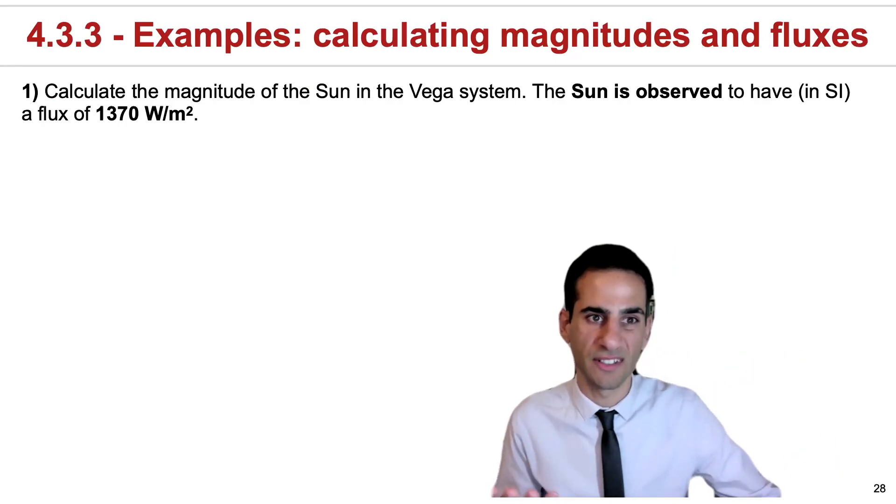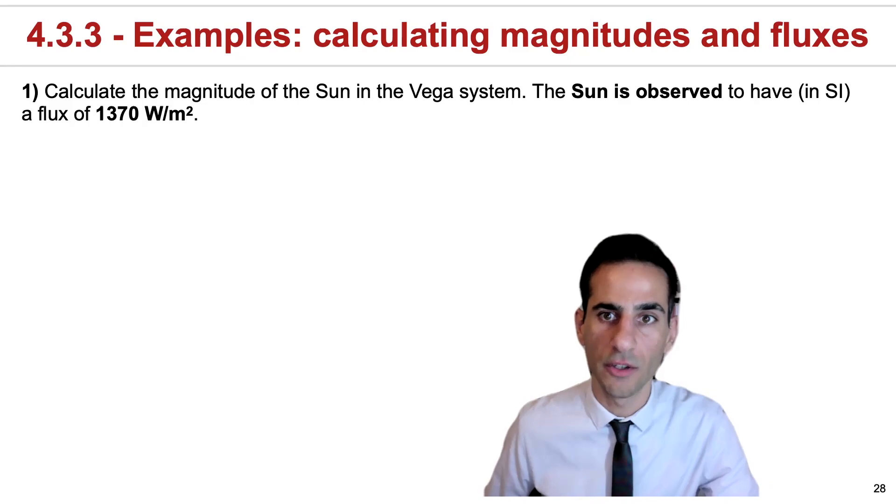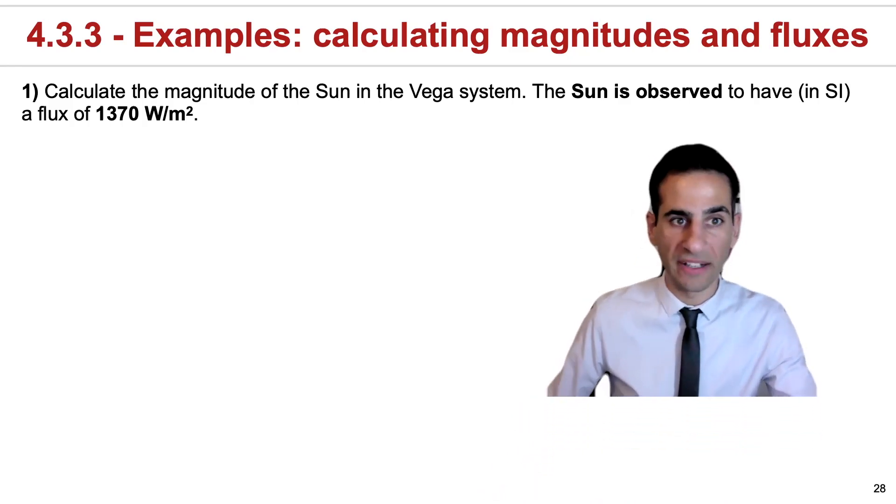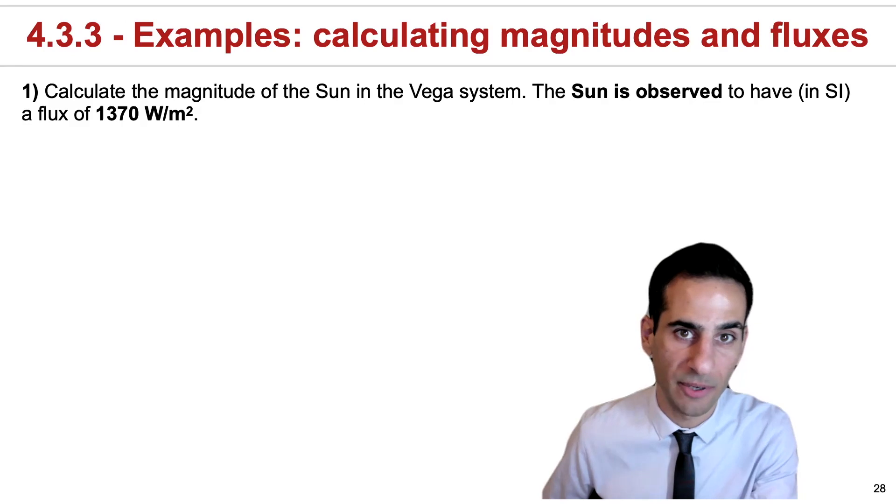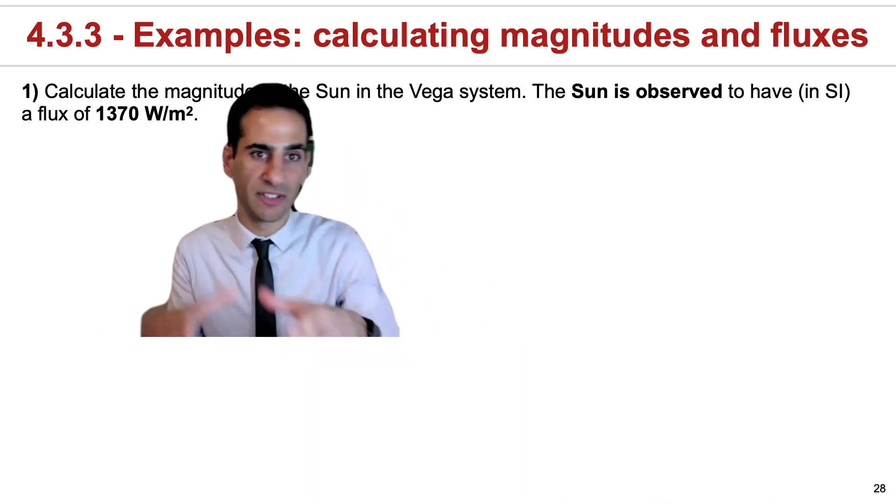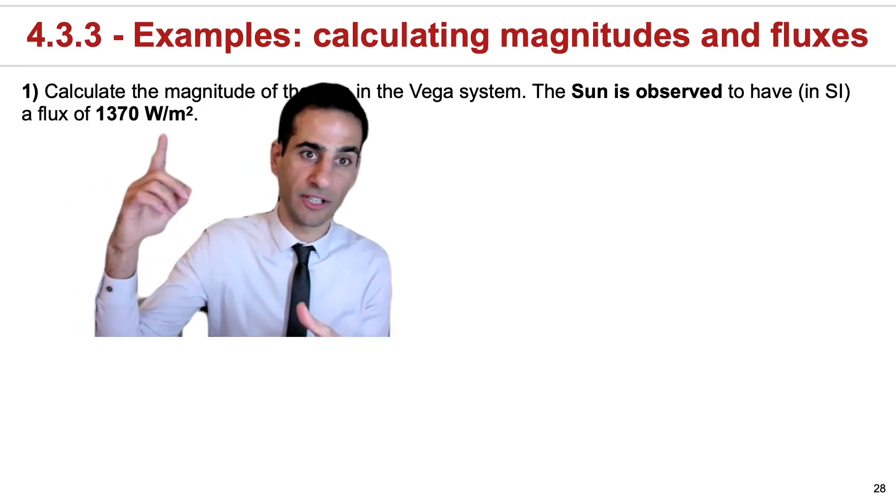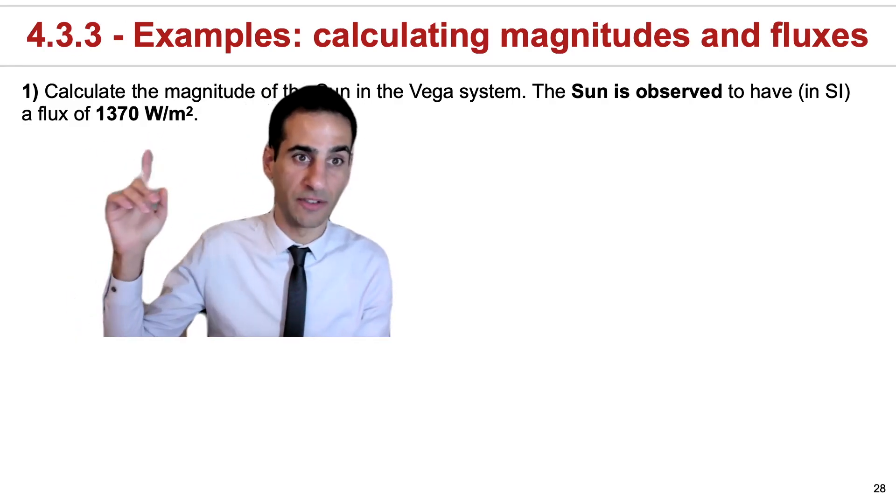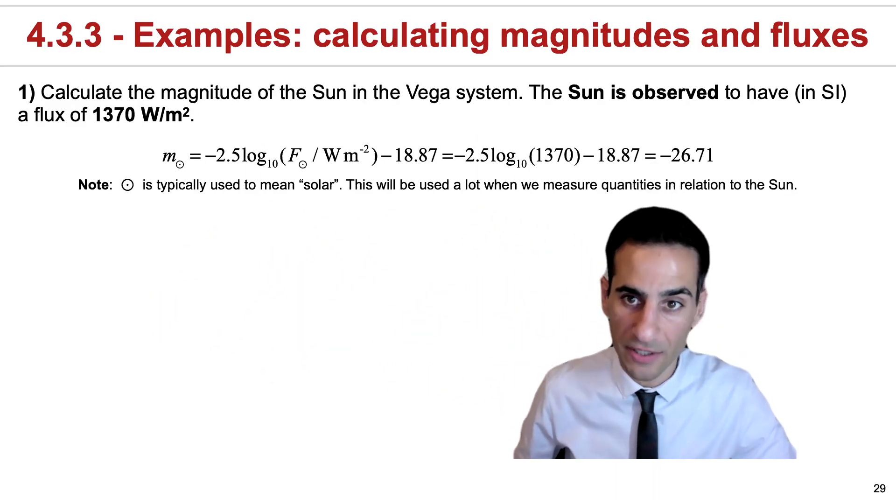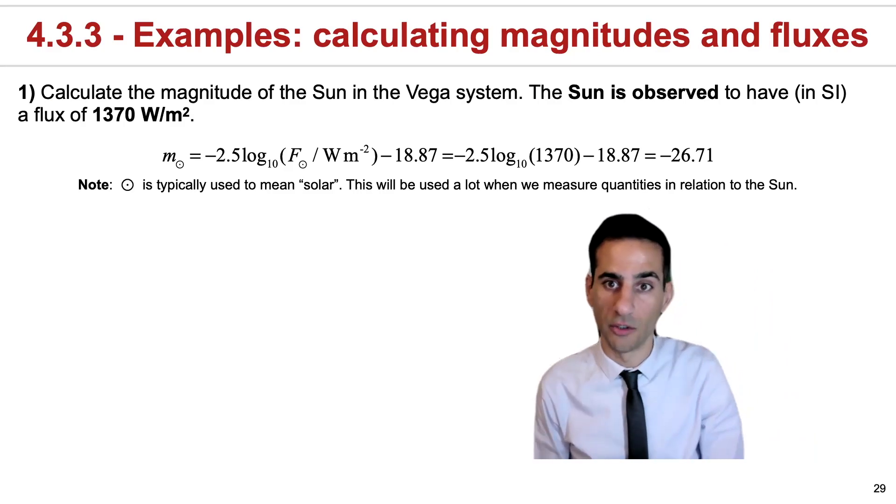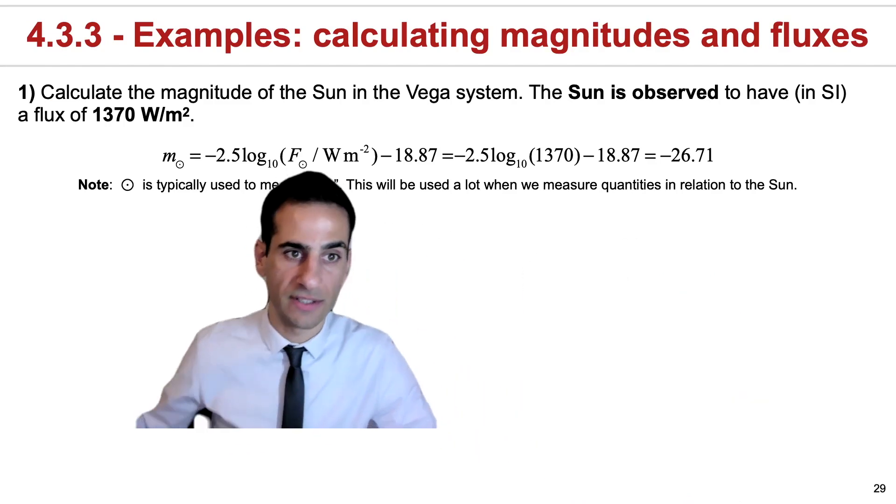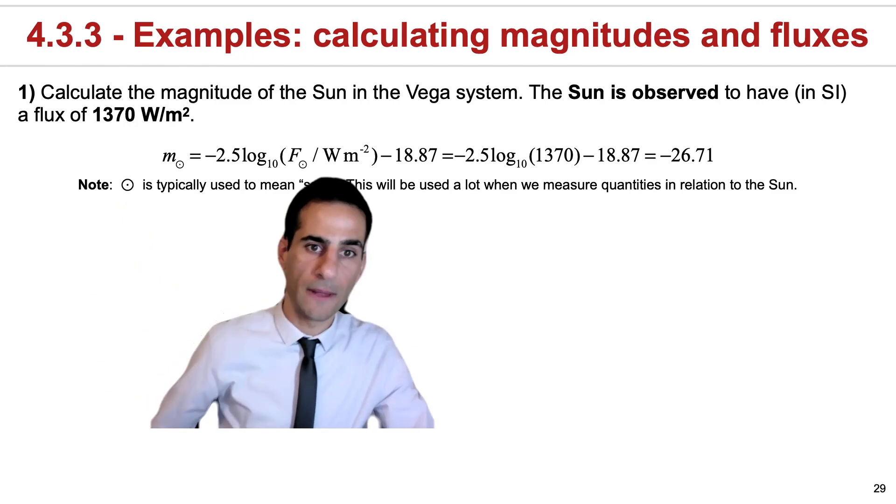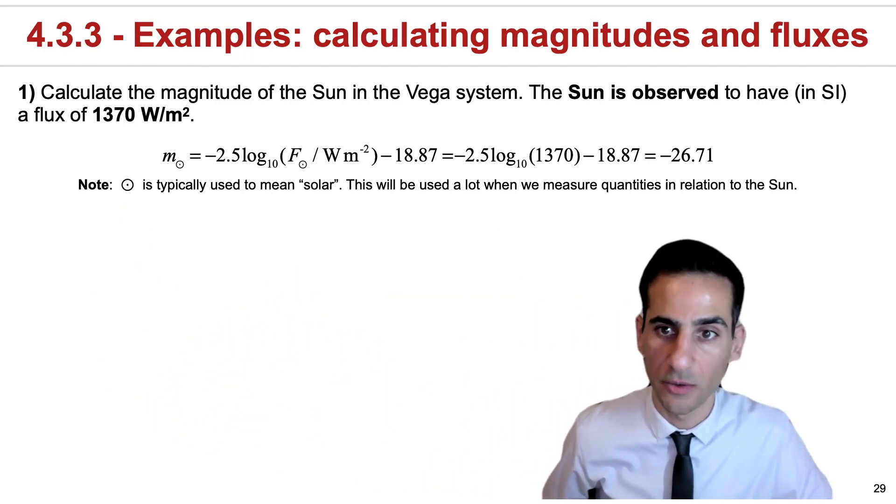Now in the lecture notes and also on the slides, you'll find examples of how you can actually apply this new knowledge of magnitudes and the Vega system. Perhaps the most obvious thing that we can do is to calculate the apparent magnitude of the sun. You can put a detector and measure that the flux that reaches the Earth is 1370 watts per square meter. If you plug it into the Vega system, this is how you very naturally get to the value of minus 26.71. This is typically denoted with this symbol meaning solar, and many times we will relate to solar quantities actually as units.